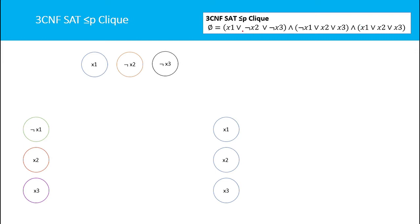We have three clauses, each clause having three literals. Each literal in every clause will be represented as a vertex. The first clause contains literals x1, ¬x2, and ¬x3. The second clause contains ¬x1, x2, and x3. The third clause contains x1, x2, and x3. These three clauses are represented here as vertices.